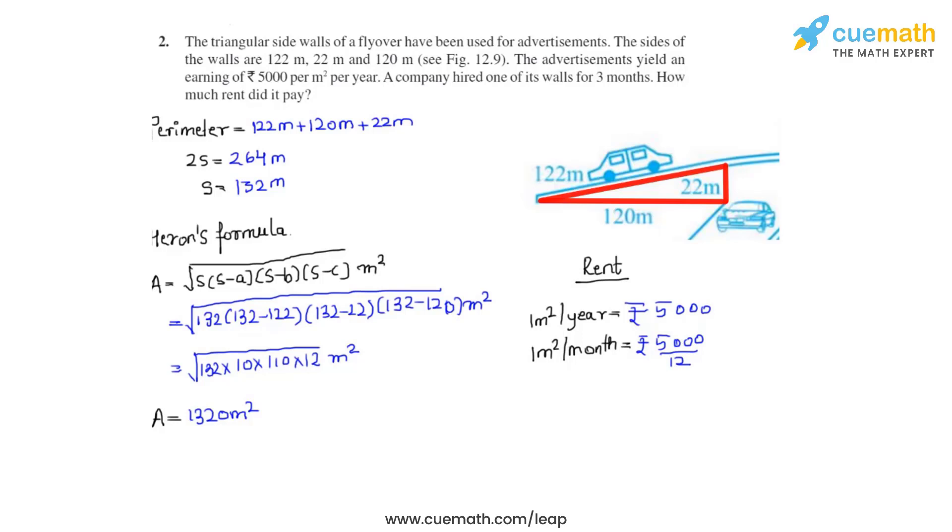Now as the company had hired the wall for 3 months, the rent for 3 months can be calculated by multiplying rupees 5000 divided by 12 times 3, which comes as rupees 1250.